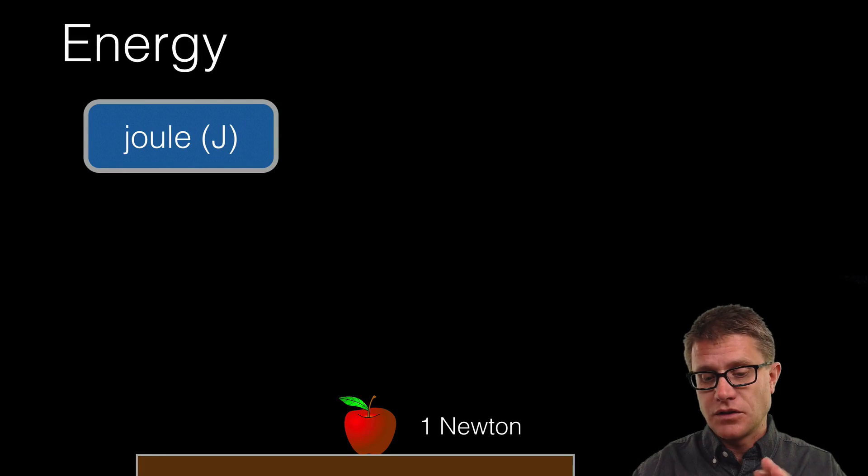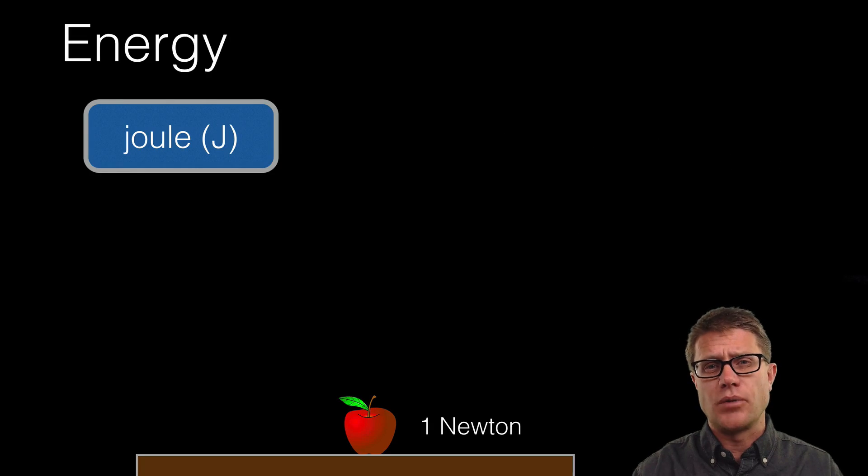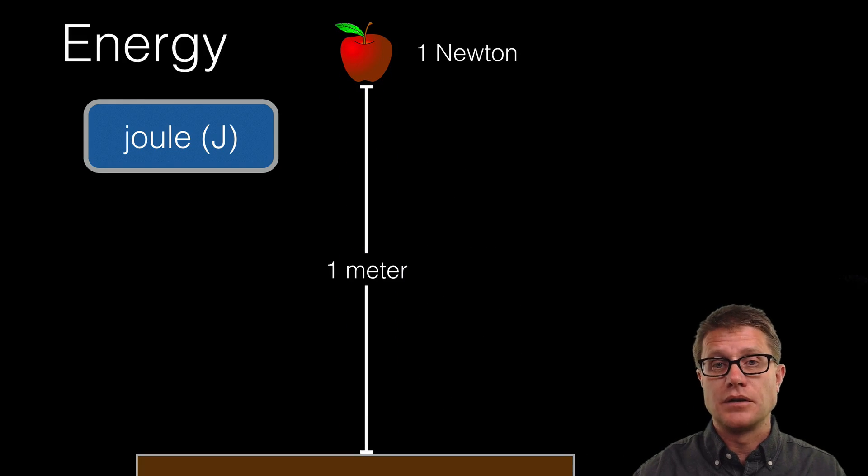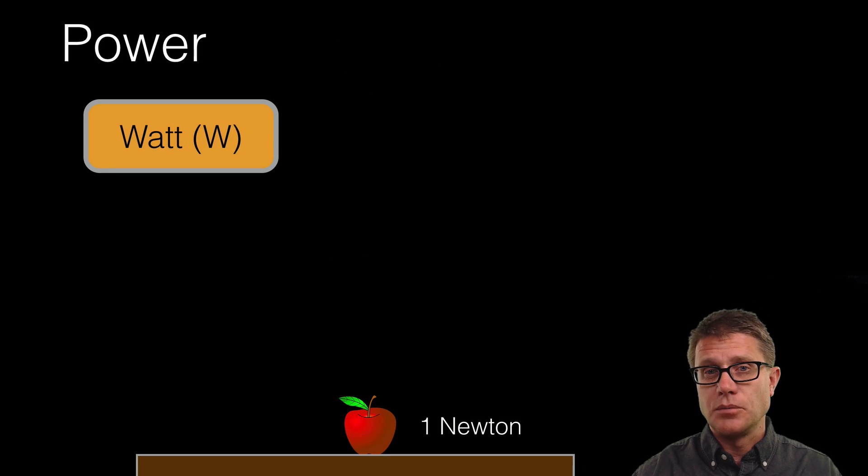Another way to think about it is force times distance. Imagine you take an apple. An apple has a gravitational force of around 1 newton. If you lift it 1 meter, that's 1 joule of energy required. You could move it slow or fast, but if you move it that distance, that's 1 joule. How do we tell the difference between moving it fast and slow? That's power.